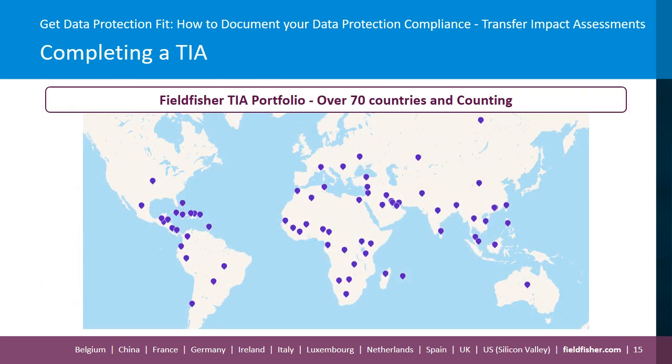FieldFisher has created a number of templates which include local country assessments. In fact, we have a portfolio of over 70 countries and counting, including key importer countries such as the USA, China, Australia and India. We are currently developing an online automated TIA process that will launch later this year in partnership with our alternative legal services business, Condor. If you're interested in knowing more about our automation services, please do reach out to us.